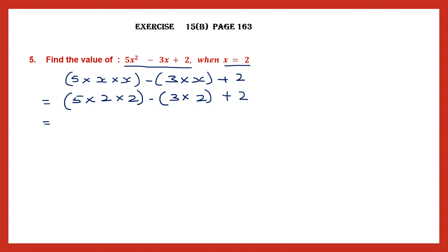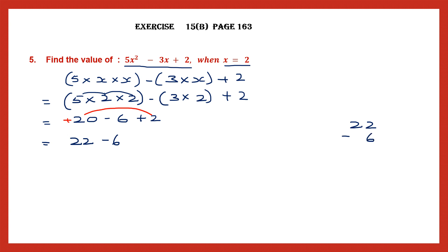Now let's solve this. 5 twos are 10, 10 twos are 20, minus 3 twos are 6, plus 2. So let's add up the numbers with the plus sign — we have plus 20 and plus 2. 20 plus 2 is 22. So we have 22 minus 6. Here we have to borrow: 12 minus 6 is 6 and this is 1. So we have found the value of this expression to be 16. So this is our answer: 16.